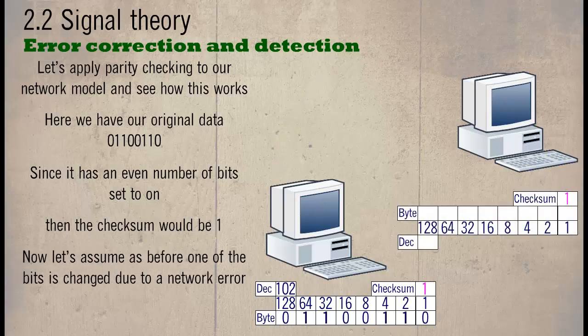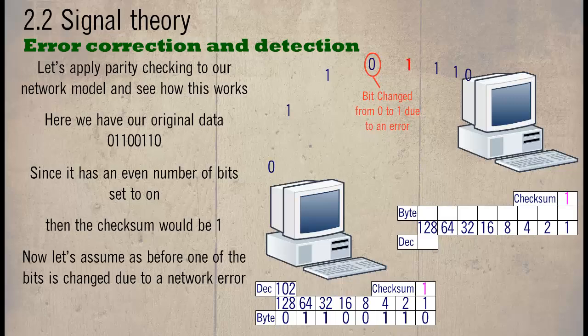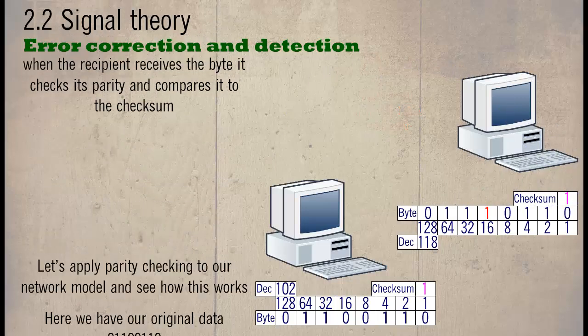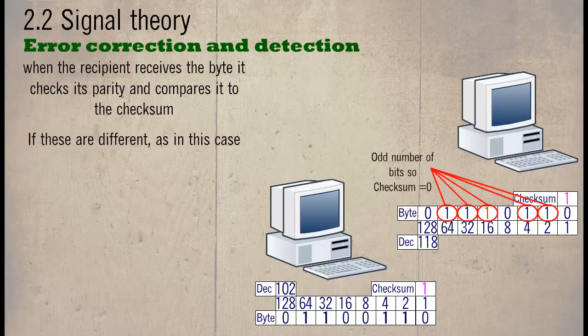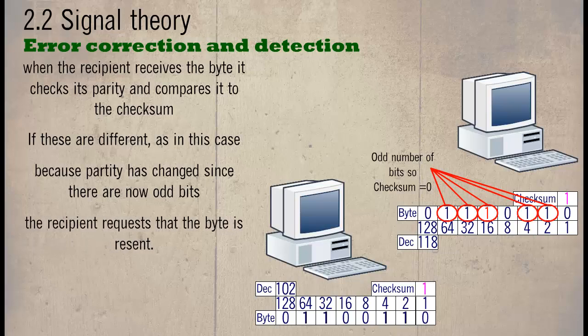Now let's assume as before, one of the bits is changed due to a network error. When the recipient receives the byte, it checks its parity and compares it to the checksum. If these are different, as in this case, because the parity has changed since there are now odd bits, the recipient requests that the byte is re-sent.